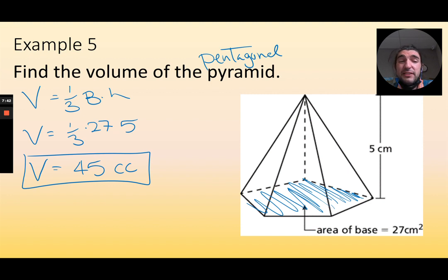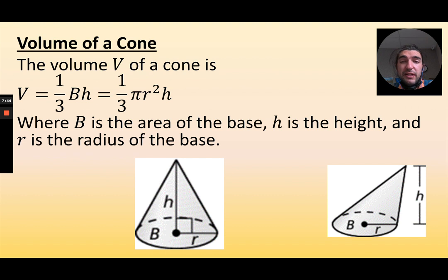I like it. What about the final type of pyramid? The round pyramid, a.k.a. cone. So I still use the same equation for a pyramid. It's just for a cone. I know that this base is always, always, always a circle. So I can replace that B with pi r squared. So that's where this equation for a cone comes from.